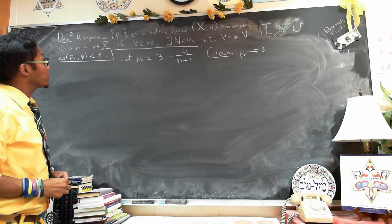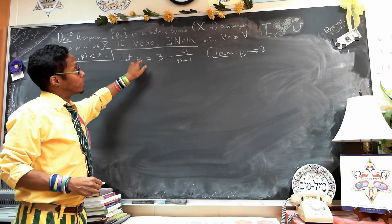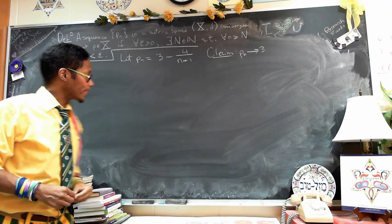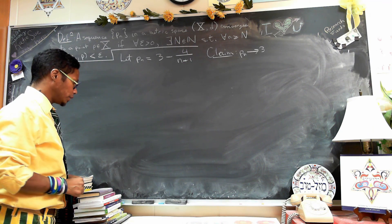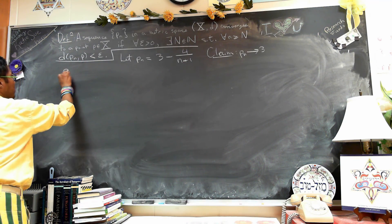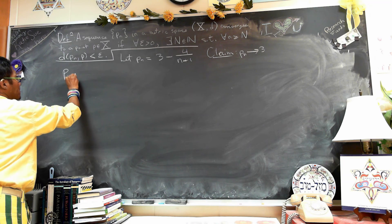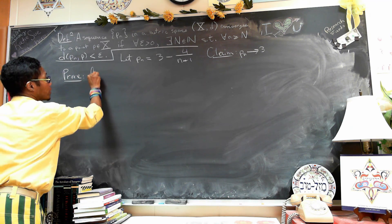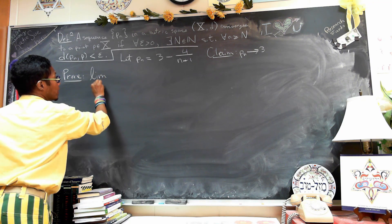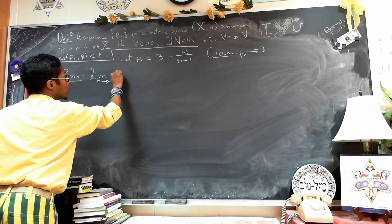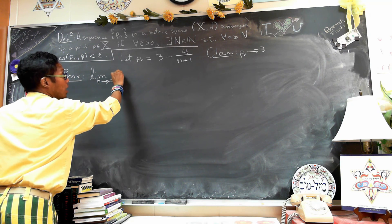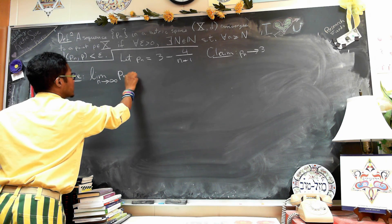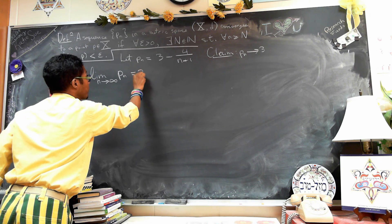This is a sequence in the metric space where the metric space is the real line. We're going to prove our claim: the limit as n goes to infinity of P_n is exactly equal to 3.